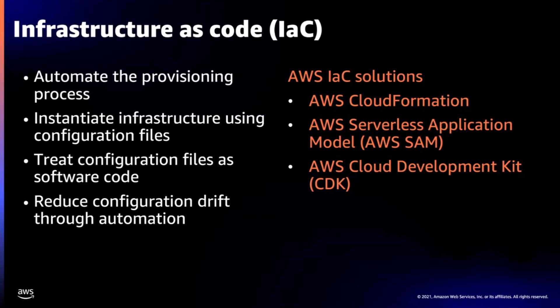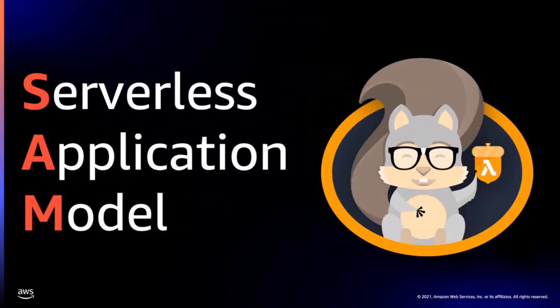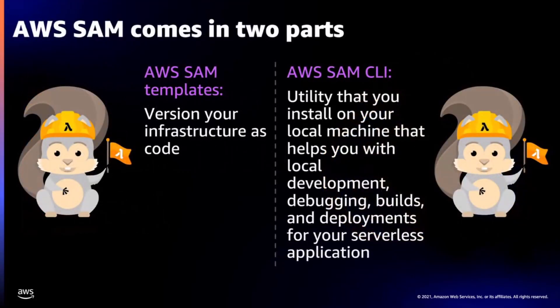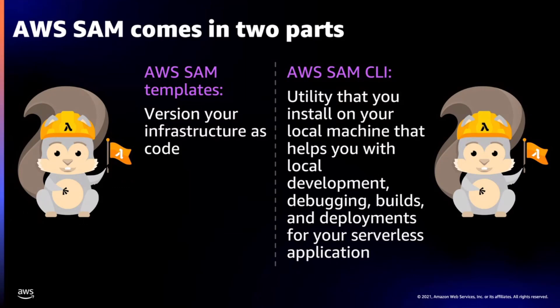We have several infrastructure as code solutions at AWS. The primary one is CloudFormation, and others are built on top of that. What we're talking about today is the AWS Serverless Application Model, or SAM, and there's also the Cloud Development Kit (CDK) which allows you to write more code. SAM is an open source framework for building serverless applications — just as React is a framework for JavaScript apps, SAM is a framework for serverless apps. It provides shorthand syntax to express functions, APIs, databases, and event source mappings. SAM comes in two parts: the AWS SAM templates for versioning infrastructure as code, and the SAM CLI, a utility installed on your local machine for local development, debugging, builds, and deployment.